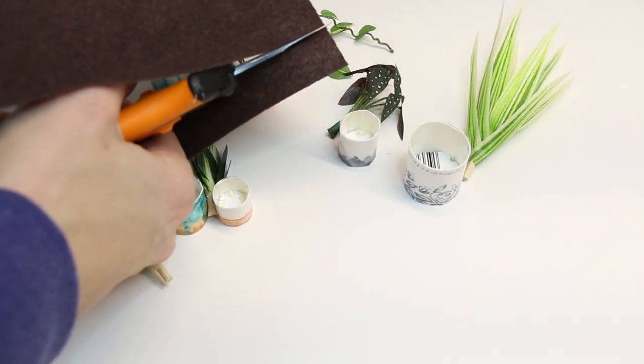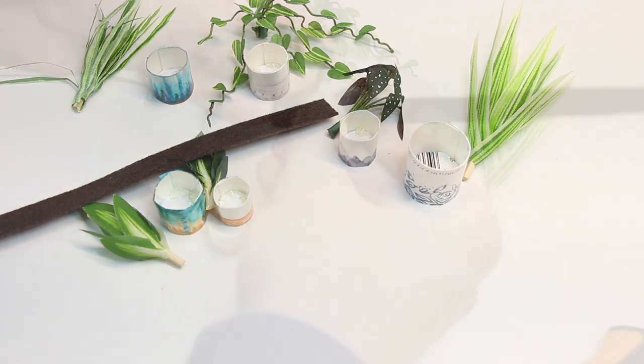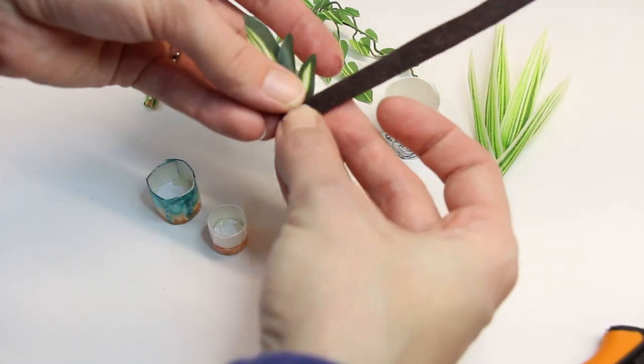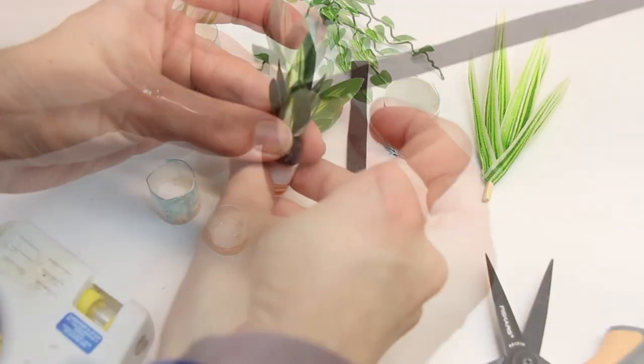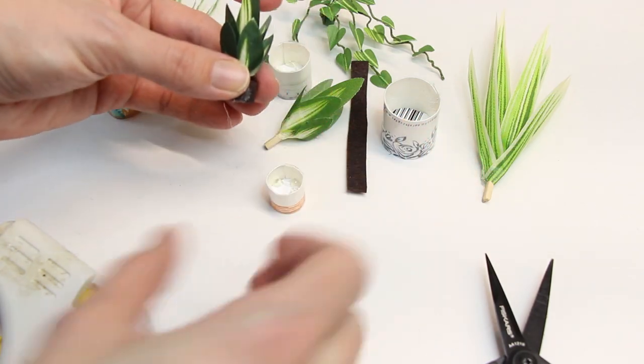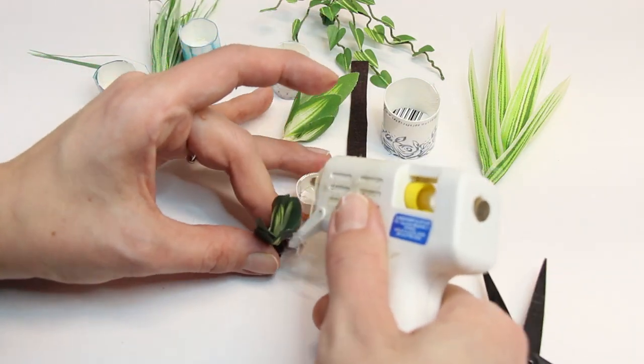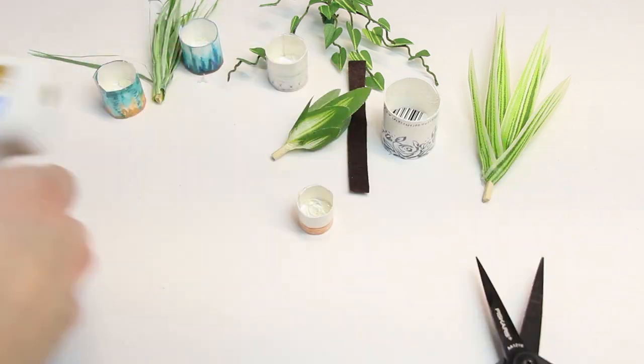Next, take some brown felt and cut it into strips. Glue the strips around the base of the plants until they're wide enough for the pot. Then glue your plants into the pots.